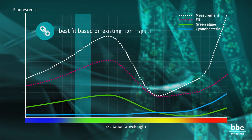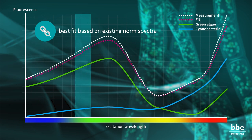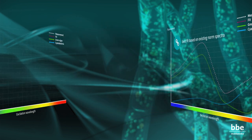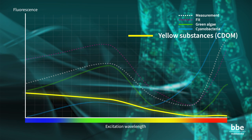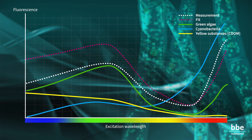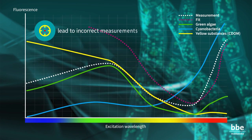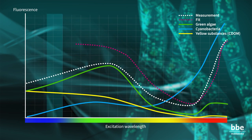Again, the software searches for the best match — in this case, the combination of two norm spectra. An important issue is the effect of so-called yellow substances, or colored dissolved organic matter. These compounds have interfering fluorescence effects and will lead to incorrect measurements. Knowing the fluorescence properties of yellow substances, the BBE devices compensate for their effects.